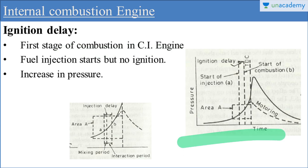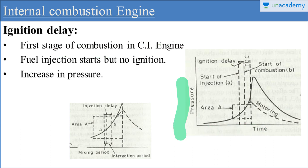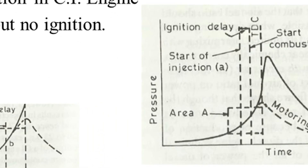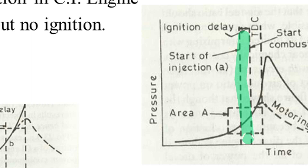This diagram is representing the pressure-time diagram, or we can say it is a pressure crank angle diagram. This curve is representing the total combustion of fuel in a compression ignition engine. The starting point is considered as the start of ignition delay or start of delay period. This particular area represents the delay period, and this curve represents the ignition delay in a diesel engine or compression ignition engine.